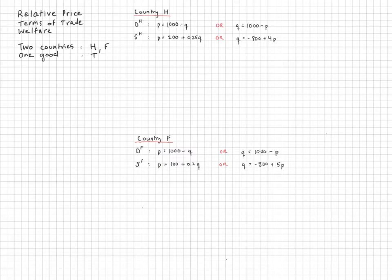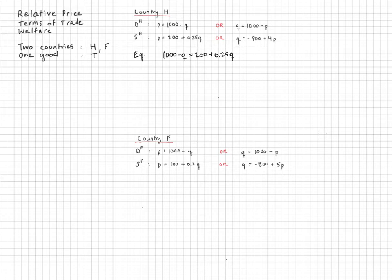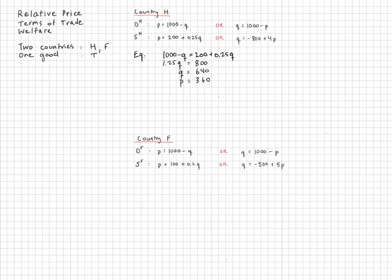Step one is to find the equilibrium relative price in the two countries. For country H, equilibrium is where demand and supply intersect, so I set inverse demand equal to inverse supply and solve for the equilibrium quantity, which is 800 divided by 1.25, giving 640. Plugging that quantity into either the demand or supply function, the price in the home country is 360.